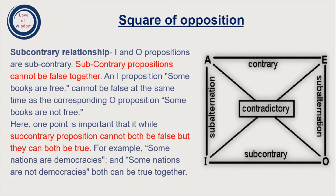Now, subcontrary relationship. If you understood the contrary relationship, subcontrary will come automatically because its condition has a slight change. Subcontrary holds between I and O propositions. Subcontrary propositions cannot be false together — this is the important condition. Contrary's condition was 'cannot be true together'; subcontrary's condition is 'cannot be false together.'